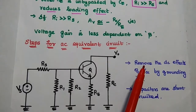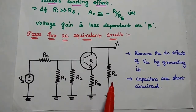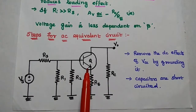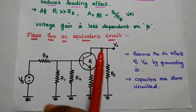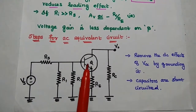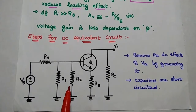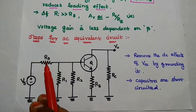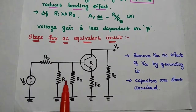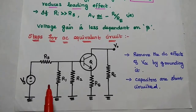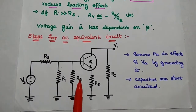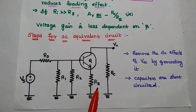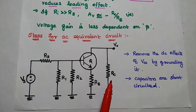Next, we are going to draw the AC equivalent circuit. For that we have to follow certain steps. First, we have to remove the DC effect of the supply voltage VCC by grounding it, so there is no VCC supply voltage. Next, the capacitors are short-circuited. The voltage signal source is in series with the source resistance. R1 and R2 resistors are in parallel, so we can combine these two resistors as a single element R1 parallel with R2. Then we have the emitter resistance and the collector resistance.